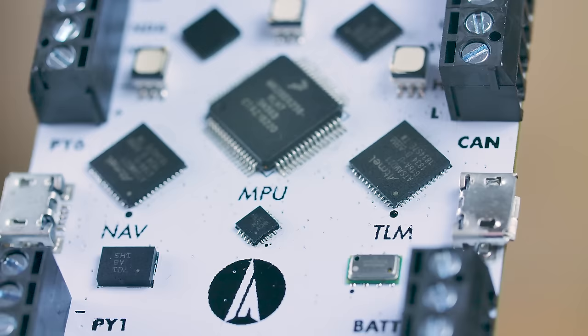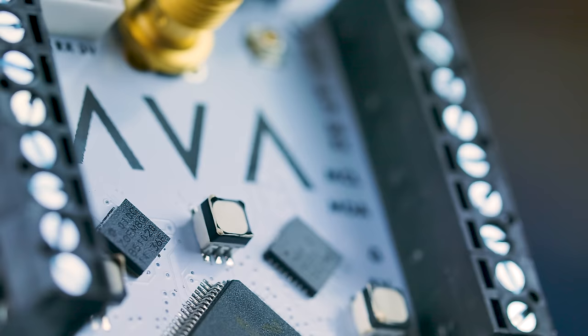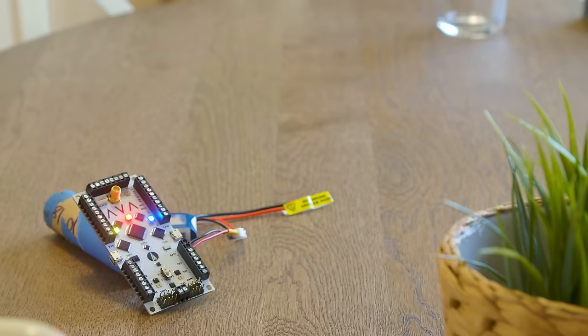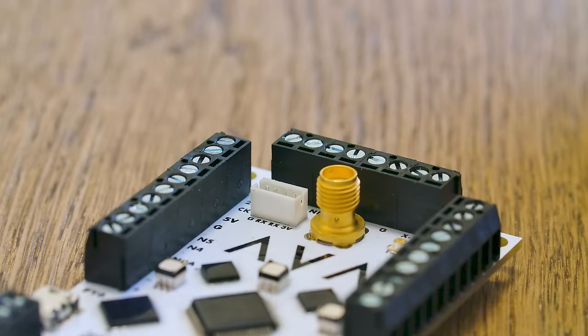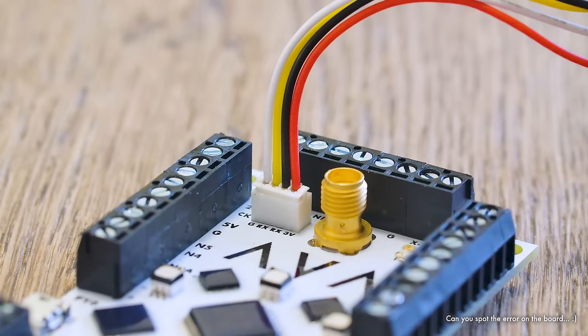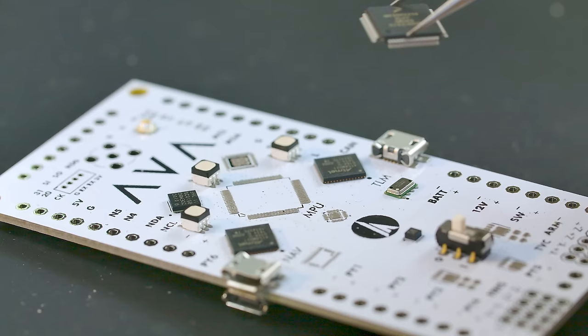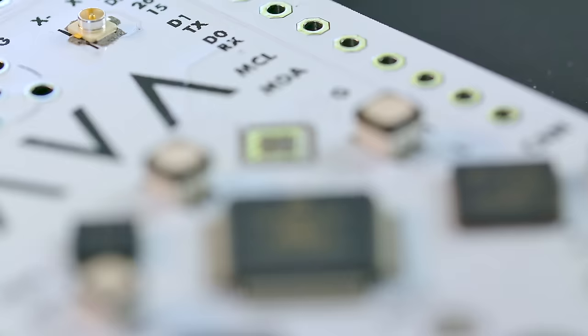On the right is the telemetry computer, or TLM. This microcontroller handles all external communications on the vehicle. For ground operation, TLM uses a Bluetooth low energy radio to send out and receive data, usually through a phone or handheld device.